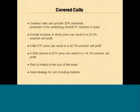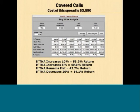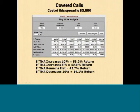Here's an example of that particular trade. I bought 400 shares of the small cap ETF at $51.22 and sold four of the 55-strike LEAPS options at $15.32. Here's a brokerage confirmation of that trade. I did a covered call analysis — the covered call calculator calculates the profit potential based on changes in the price of the ETF at option expiration. In this example, we went from a 10% increase to a 20% decline in the price of the ETF to calculate the profit potential.